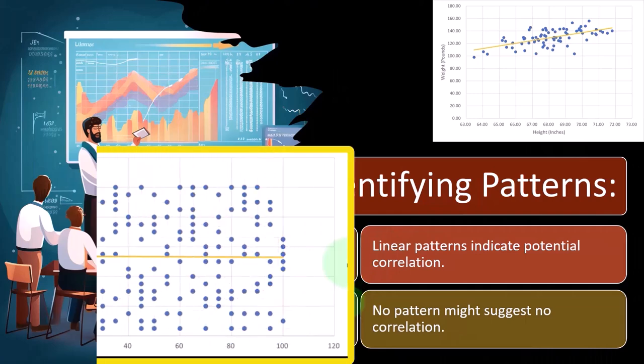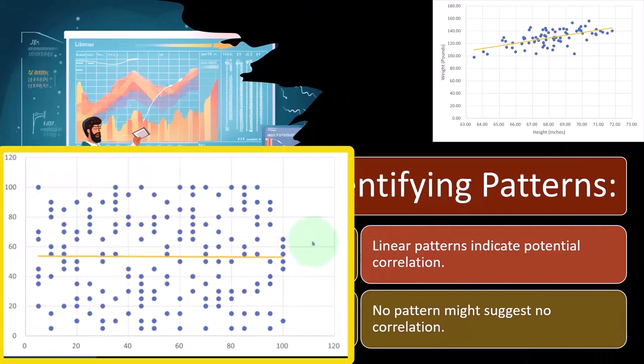And see, no pattern might suggest no correlation. So in other words, if I plotted this out, these two data sets, whatever those might be, and I got this set of points, and then I tried to draw a trend line and I get no correlation or possibly a very low correlation, then that's going to indicate to me that there isn't a cause and effect relationship.